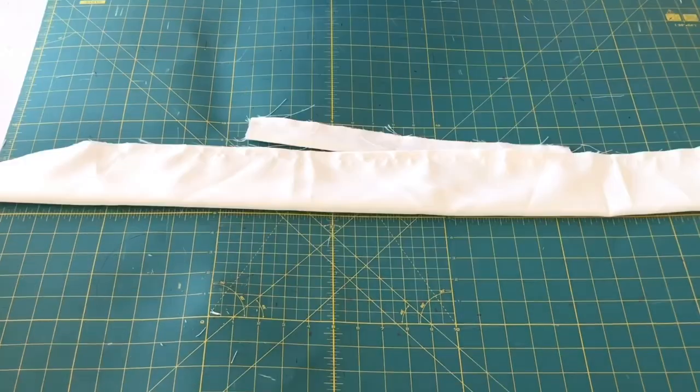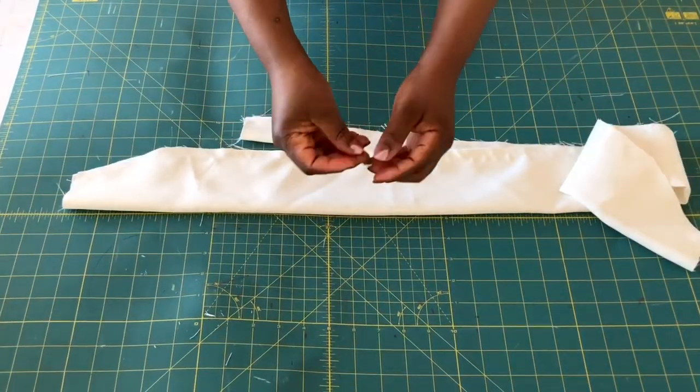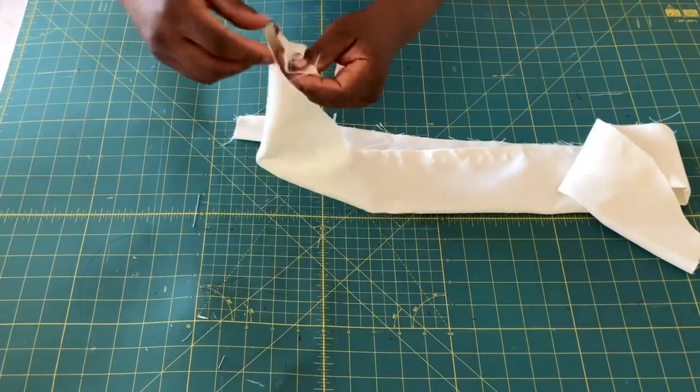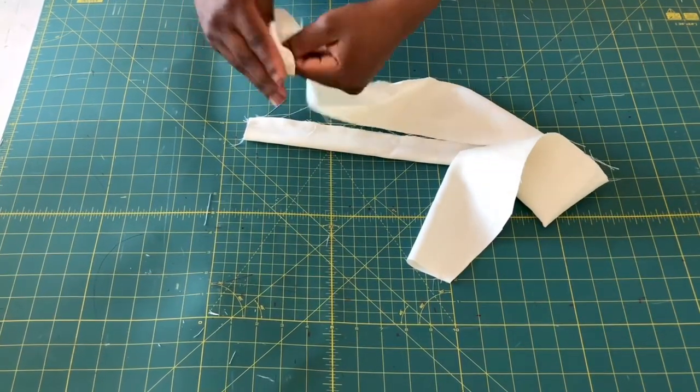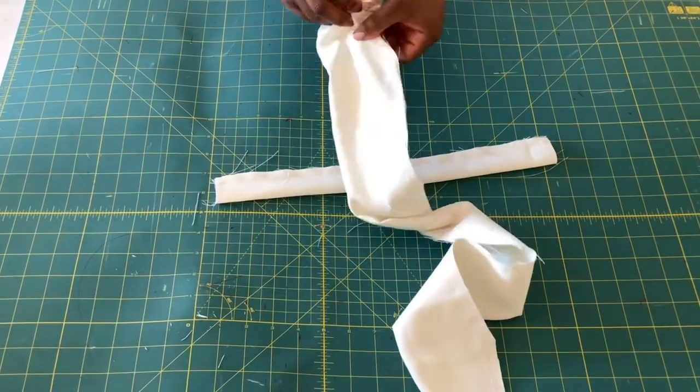Now use a safety pin to turn it right side out. Hook it on the edge of the fabric and pass it through the fabric until it comes right out of the other side. Do the same for the elastic casing as well, then go ahead and iron it.